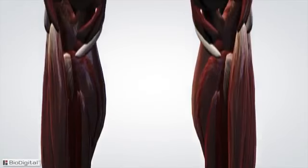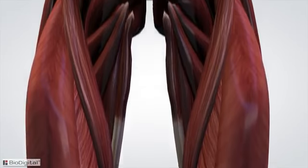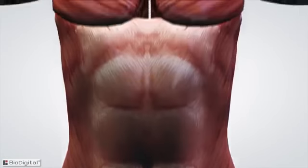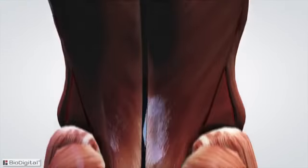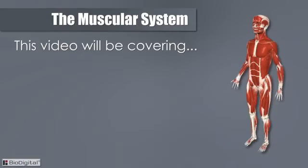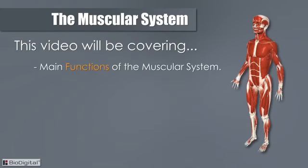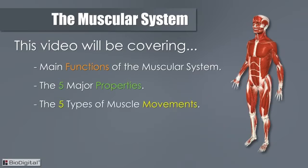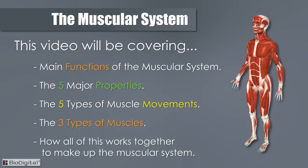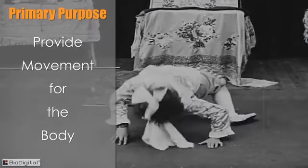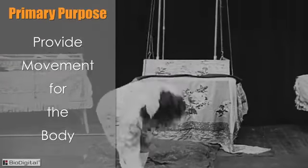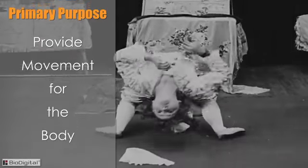The muscular system is made up of over 600 muscles. While we won't be covering all 600 individual muscles in this overview video, we will be discussing the main functions of the muscular system, the five major properties, the five types of muscle movements, three types of muscles, and how all of this works together to make up what we know as the muscular system.